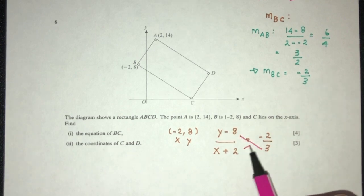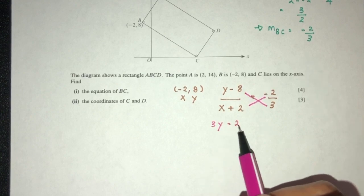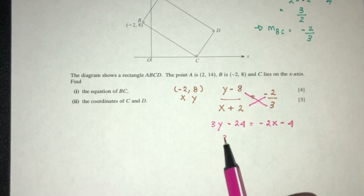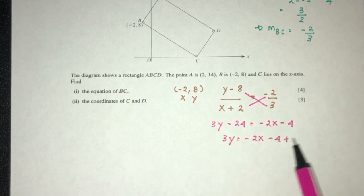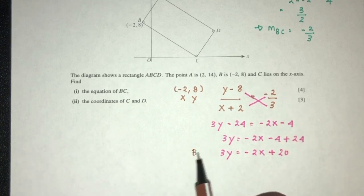Now cross-multiply. Let's see what do we have. You will have 3y minus 24 = -2x minus 4. 3y = -2x minus 4 plus 24. 3y = -2x plus 20. And that will be the equation of our BC. That is part 1 of the question.